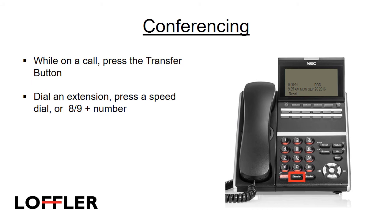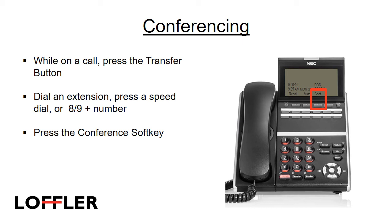To conference a party into a connected call, press the transfer button. Dial an extension, press a speed dial, or dial the trunk access code — 8 or 9 — and then the number. Press the conference soft key when the party answers; you'll then be connected with all the other parties. If one party hangs up, the others remain connected.